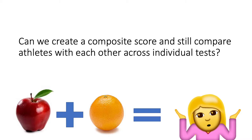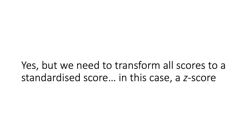The goal is to create a composite score and still compare athletes across individual tests. This is tricky because we're comparing apples and oranges — bench press in kilograms, sprint speed in seconds, jump height in centimeters, body composition as a percentage. The key to combining these is transforming all scores into a standardized score, specifically a z-score, which we'll explore in the next few slides.